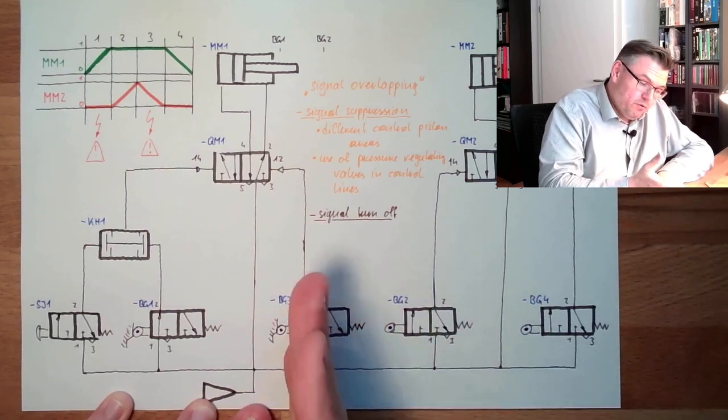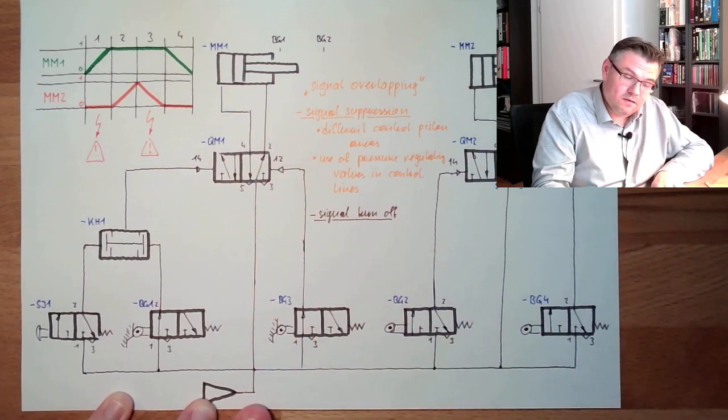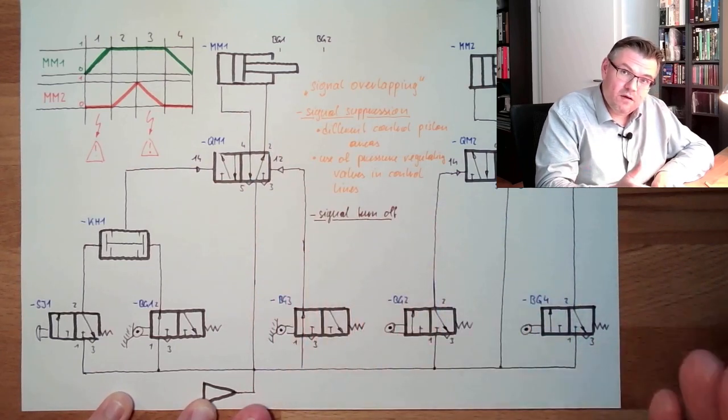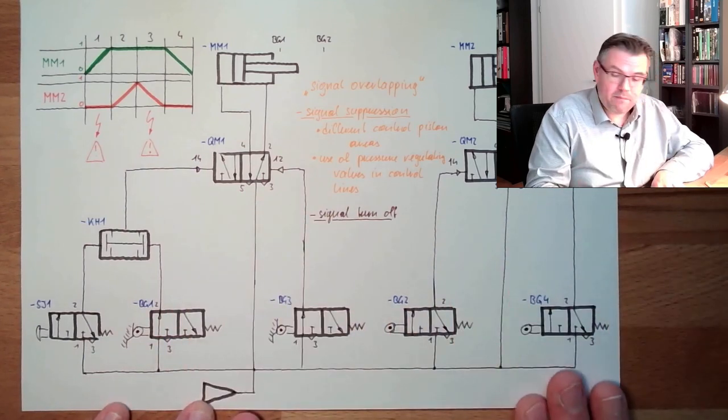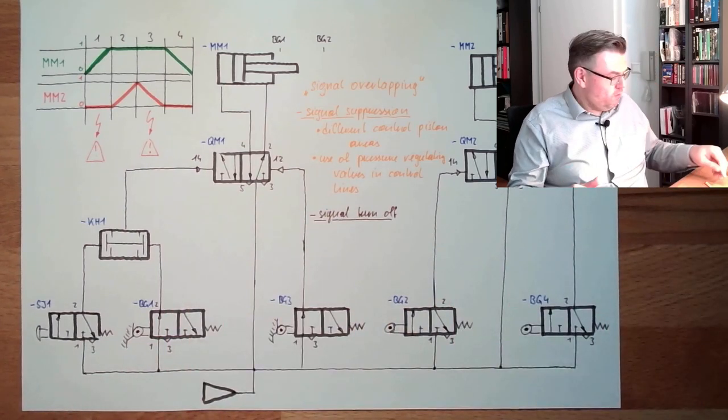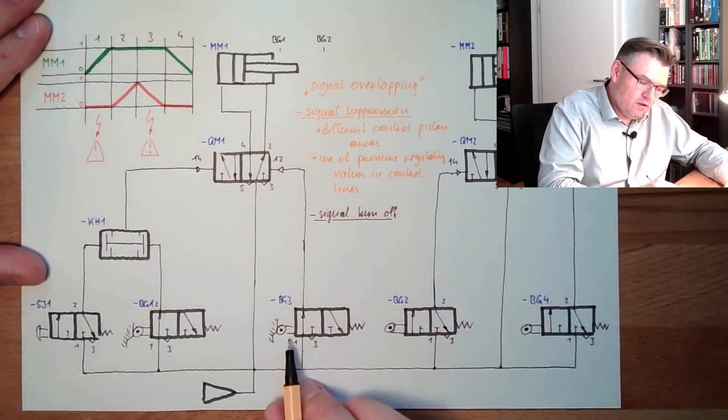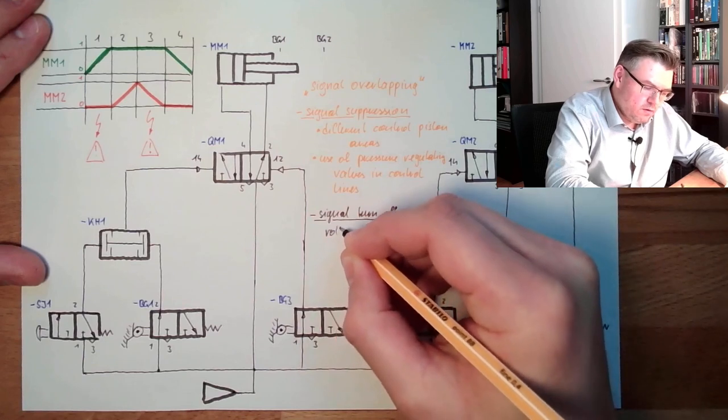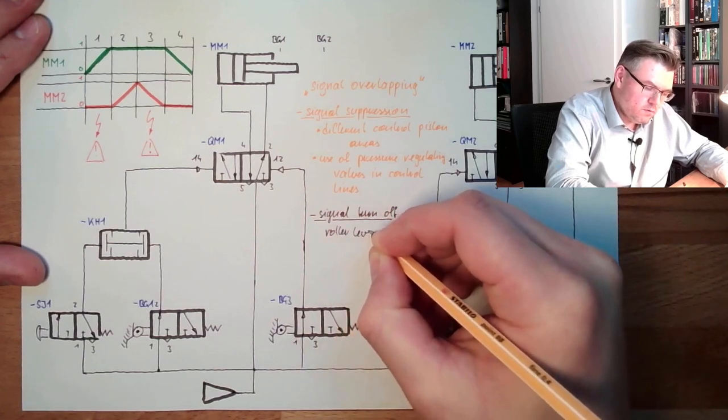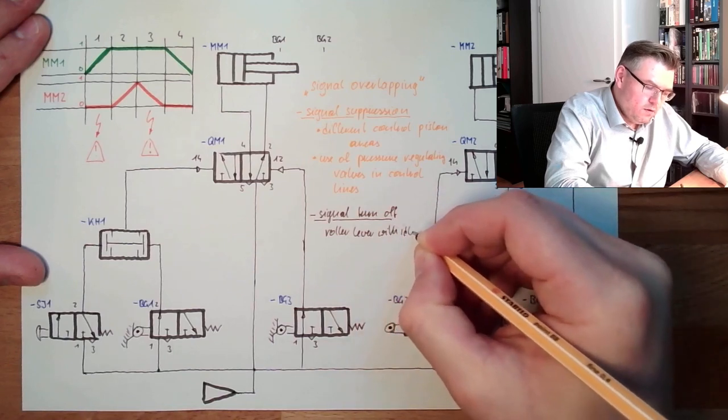So, one possibility of turning off. If we trigger just an input here, and then turn it off again, this means we signal turn off. We are also fine. Because then it has switched. And there is no risk of overlapping. So, we could use, for instance, not normal roller level valves.